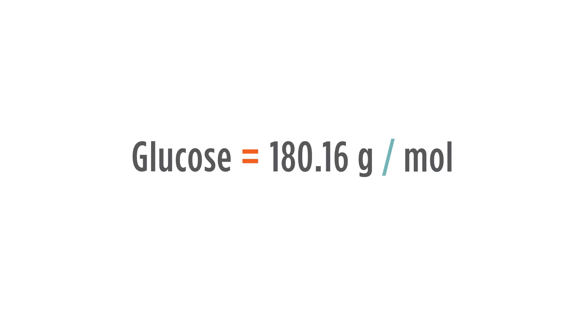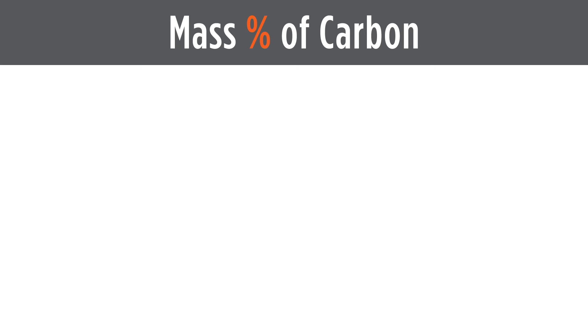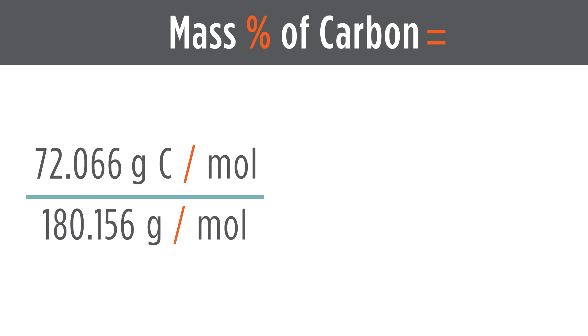To get the percent composition, we look at the mass percentage of each element. For carbon, the mass percent equals the mass of carbon in glucose, 72.066 grams per mole, divided by the molar mass, 180.156 grams per mole.